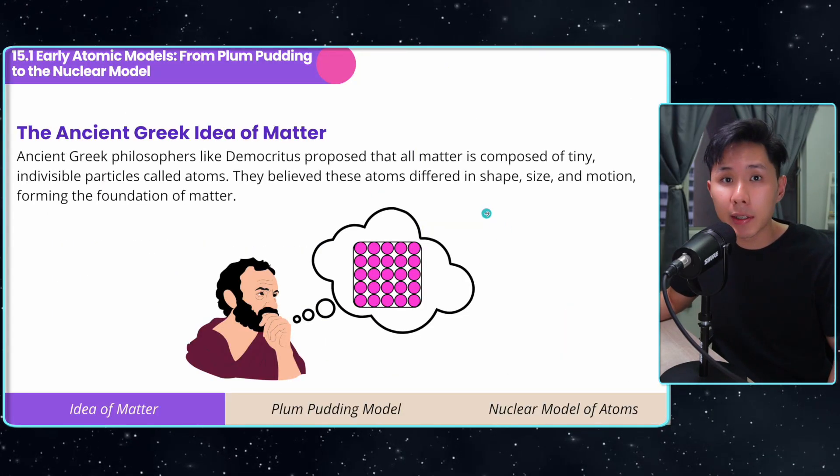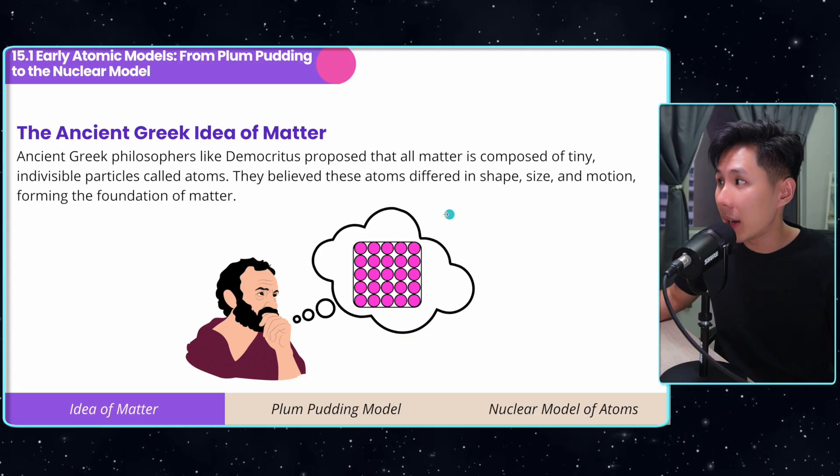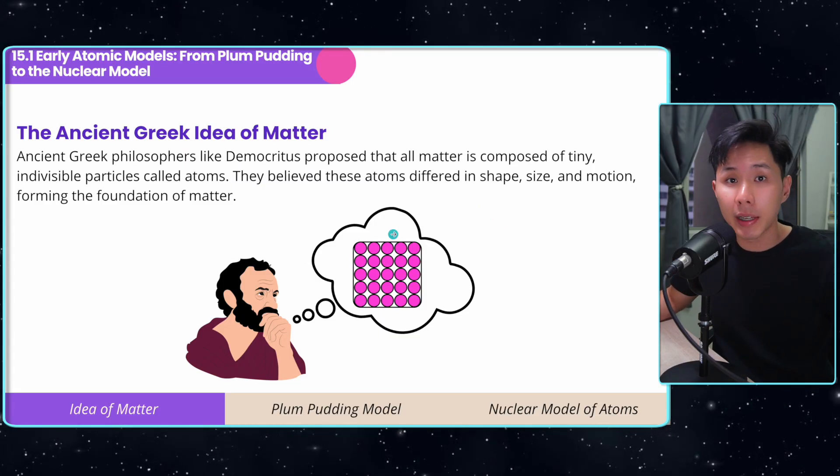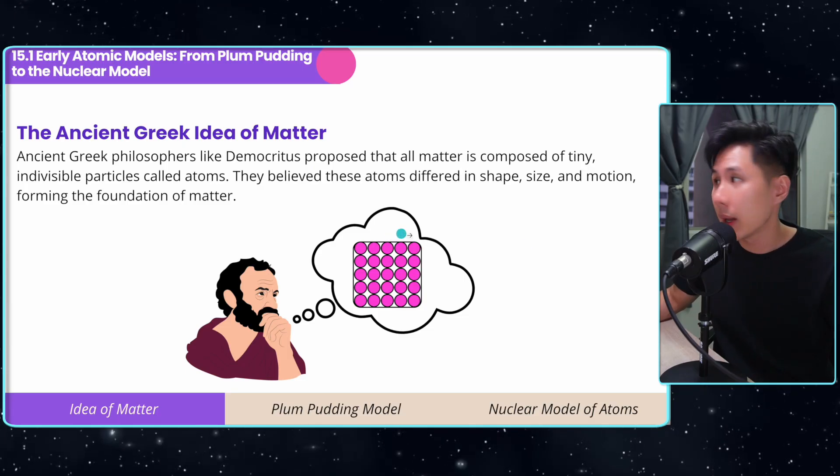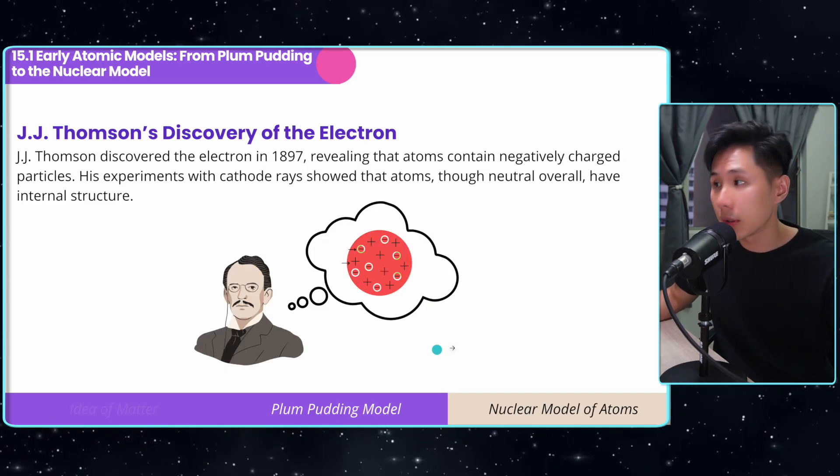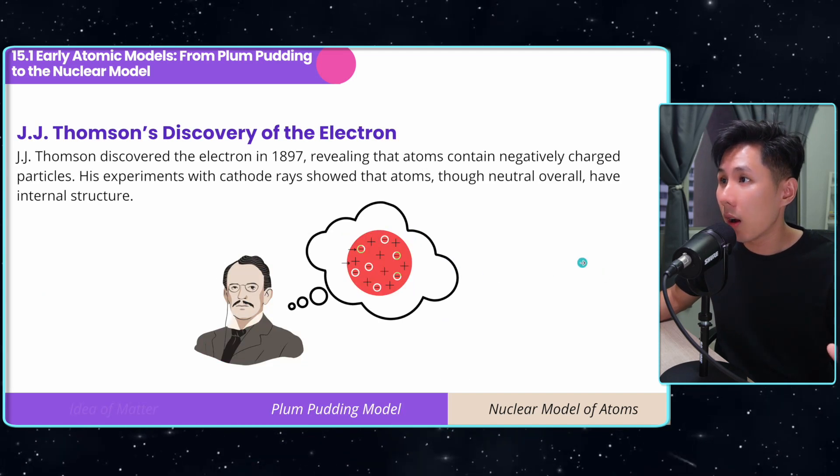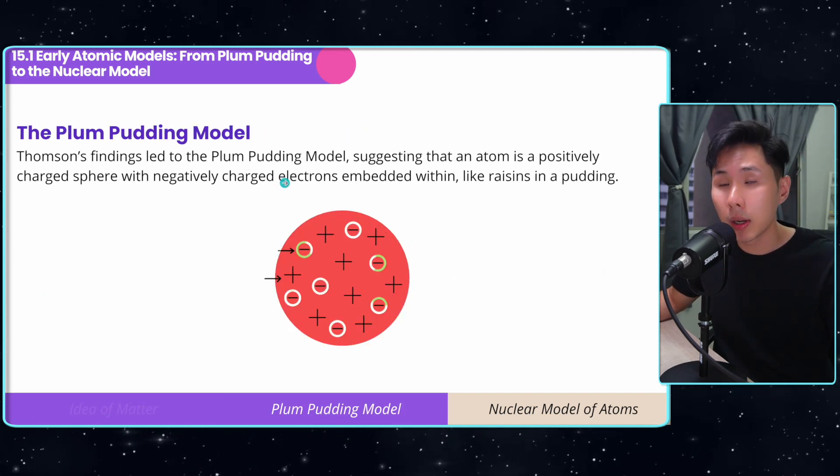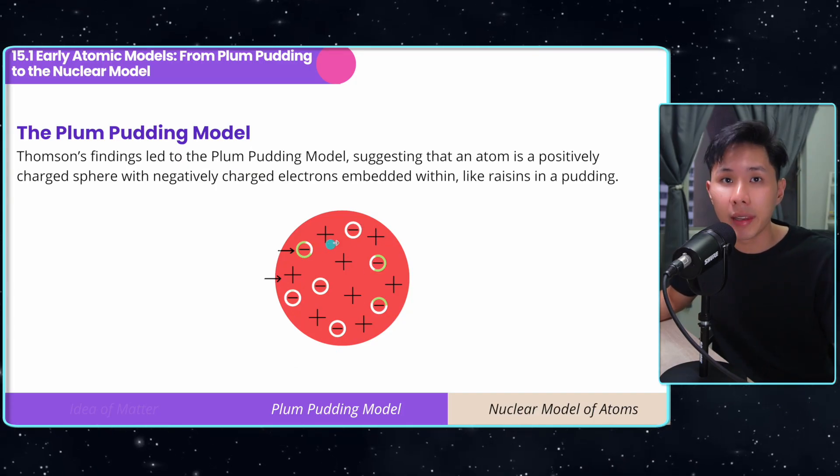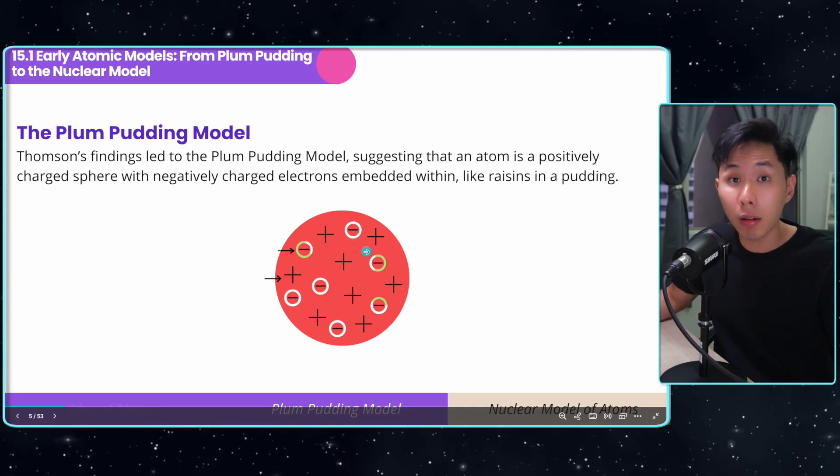Now let's start off with some history of nuclear physics. The great philosopher Democritus proposed that all matter is composed of these tiny little atoms. He believed that these atoms are different in terms of size, shape, and motion, forming the foundation of matter. Soon after, J.J. Thomson discovered that there is an internal structure within these atoms. He called it the Plum-Pudding model, in which within each atom it consists of positively charged protons and negatively charged electrons.